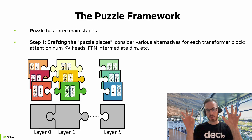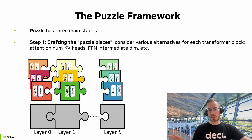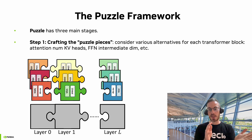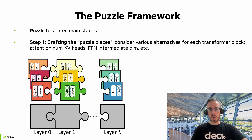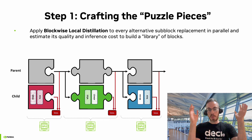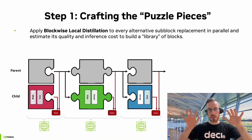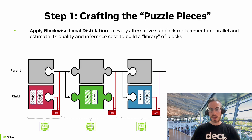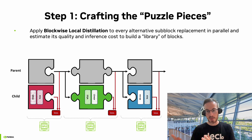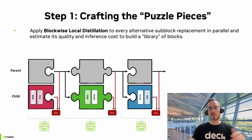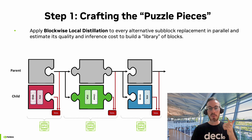In the first stage, we craft puzzle pieces, where we consider various alternatives for each of the transformer blocks. For example, for each block, we may consider a different number of attention key-value heads, or a different intermediate dimension of the FFN, or maybe even dropping these layers entirely. We take this library of blocks and train it using a method called blockwise local distillation, where each layer is trained individually and in parallel to all the others. After we have these trained blocks in the library, for each one of them, we estimate its quality as a replacement for the original transformer layer and also its inference cost, both in memory and runtime.